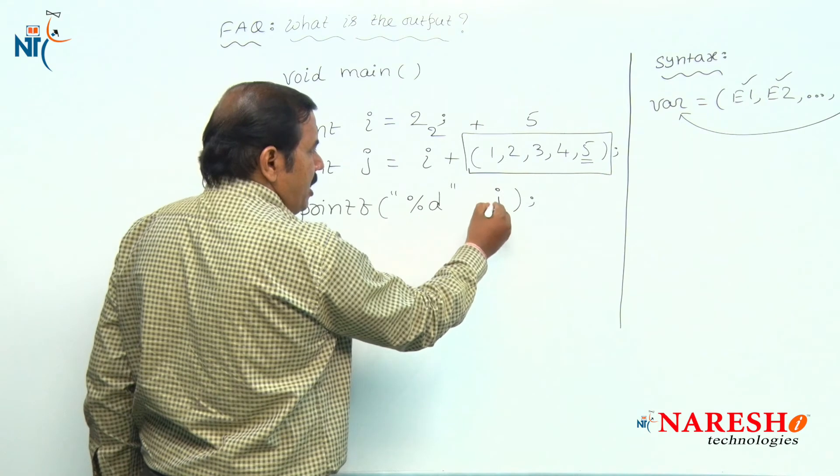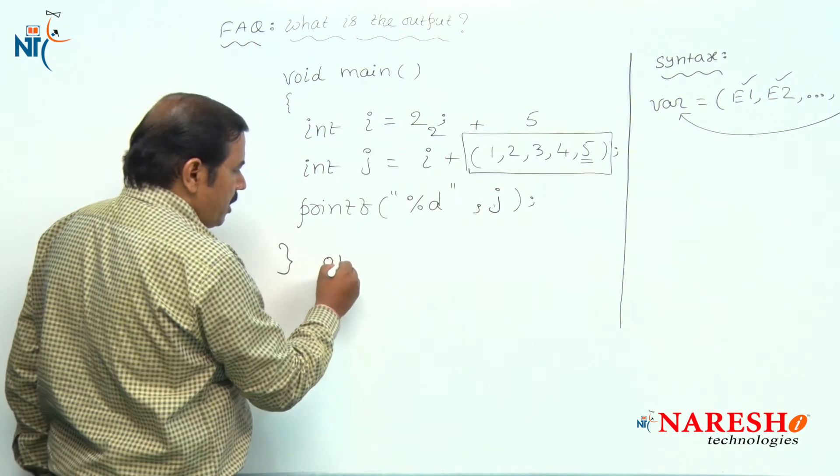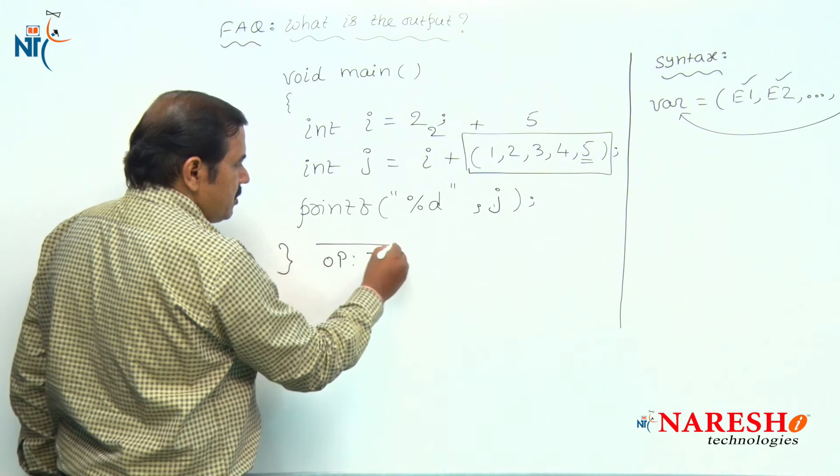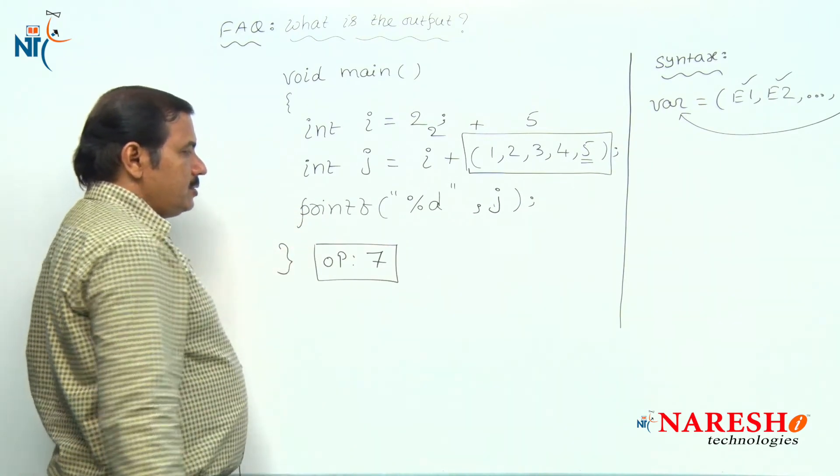If I print the value of j, the output I will get is 7. This is the final result of this code.